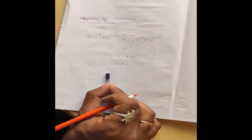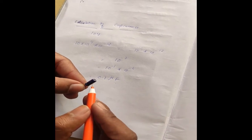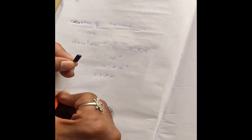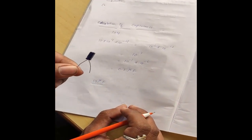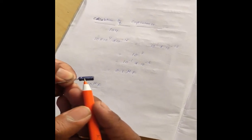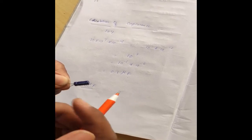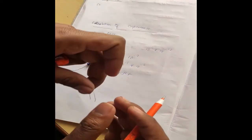For the electrolytic capacitor, the value is printed on it by default. This capacitor is 10 micro farad. This type of capacitor has a polarity of plus and minus. On the capacitor body there is a negative line indicating the negative terminal, and the other terminal is positive. The ceramic capacitor does not have any polarity.